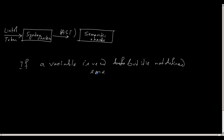It is a semantic error even though syntactically it is correct. A variable follows the rules of the grammar — if I use an identifier like x = 5 it is a valid statement — but if x is not defined, then it is semantically wrong. Not defined implies it is a semantic error.